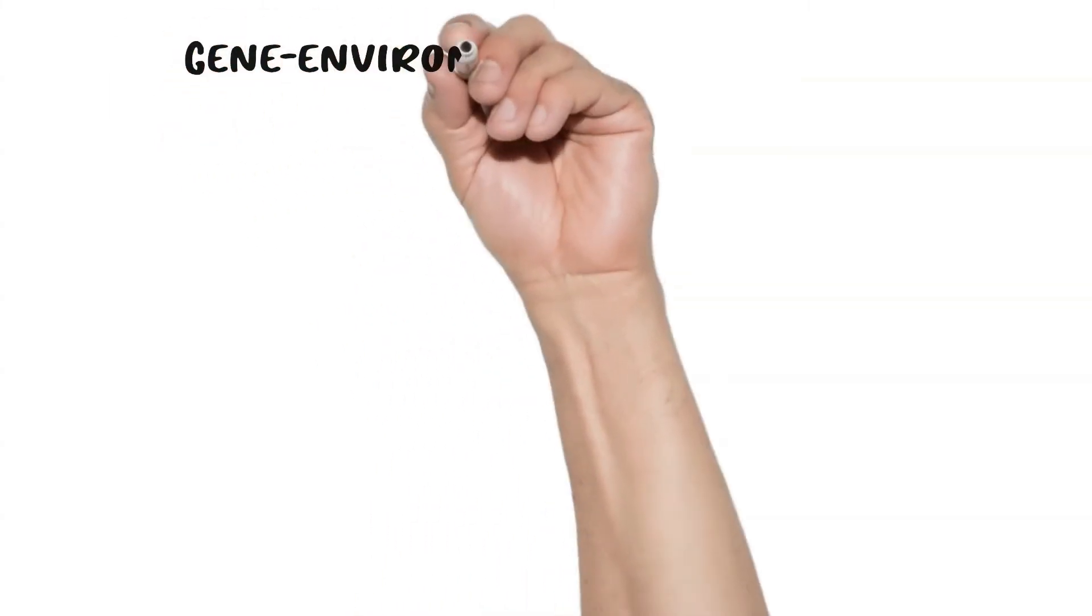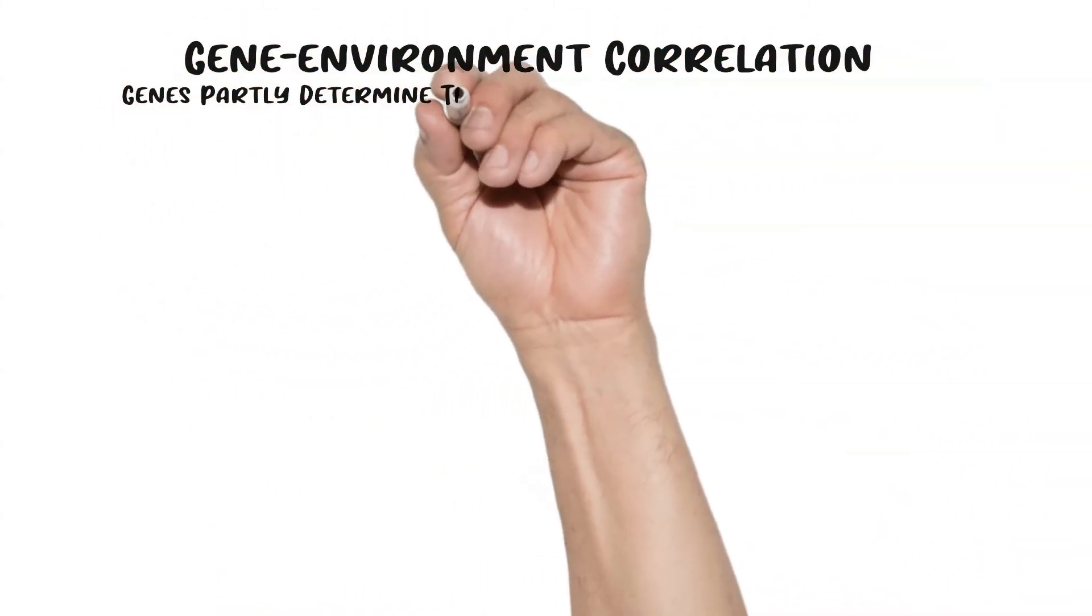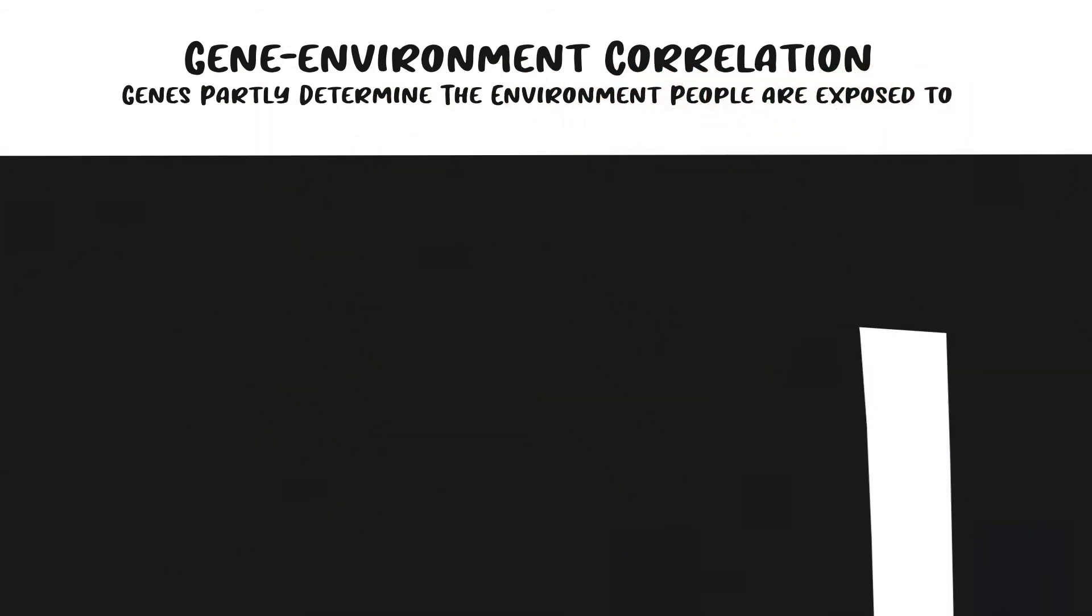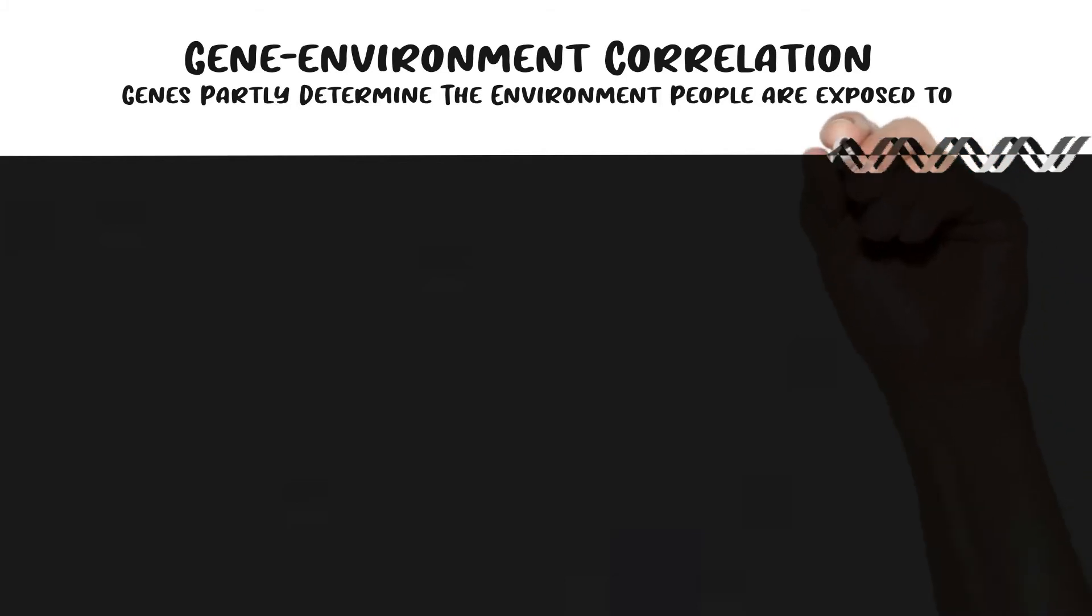And then, as if things weren't confusing enough, we have to remember that there's a gene-environment correlation. And that's just saying that genes partly determine the environment that people are exposed to. So in the real world, genes and the environment have this crazy feedback loop that makes it impossible to say exactly how much each contributed.